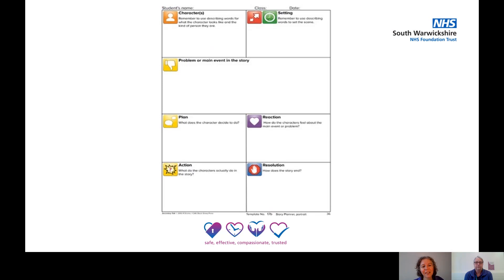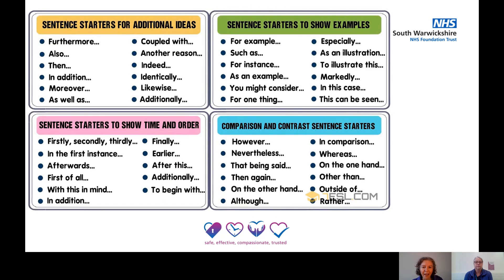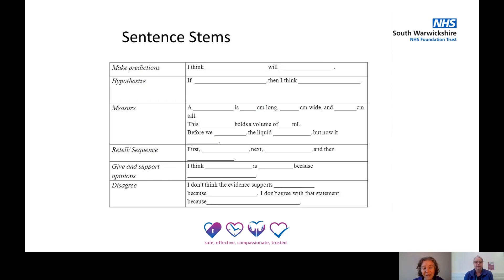This is a way of structuring a story. And here are some sentence starters for different types of lessons — for example, if you're comparing and contrasting, or giving examples — just giving students those vocabulary options they can use. Sentence stems are another approach: in a science lesson, for instance, giving them the words on the left and a good amount of structure on the right so they don't have to make the whole sentence up, but they're putting in those key words which are important.